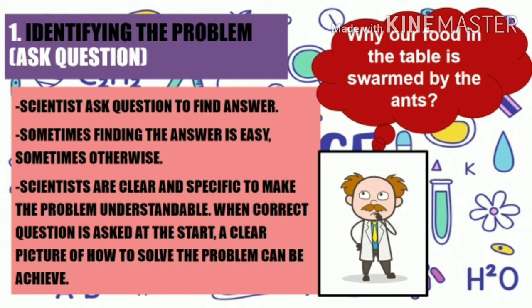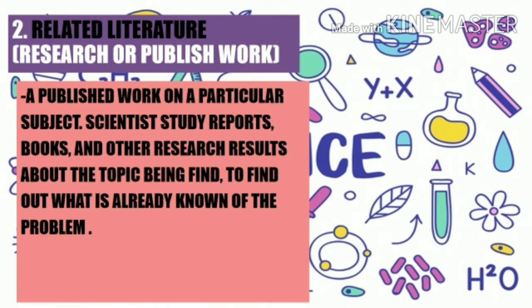Here is a simple example of identifying the problem: Why is the food on the table being swarmed by ants? After identifying the problem comes related literature — a research or published work on a particular subject. Scientists study reports, books, and other research results about the topic to find out what is really known about the problem — in other terms, literature or published research about the problem being asked.